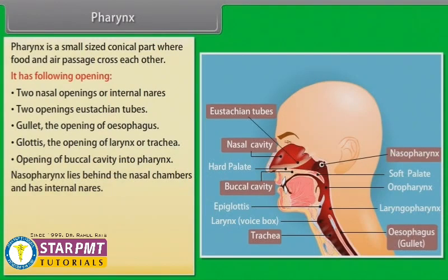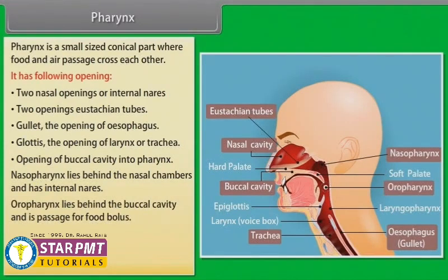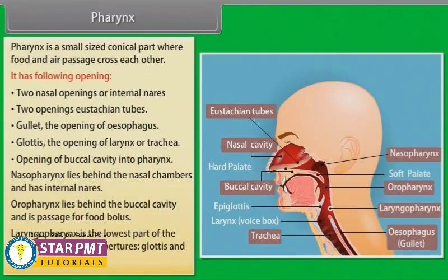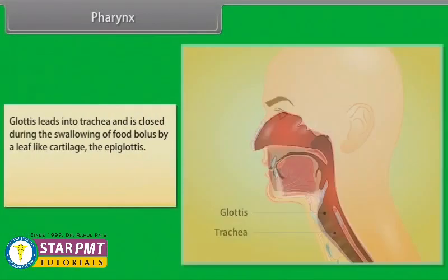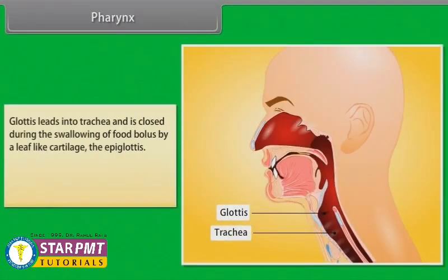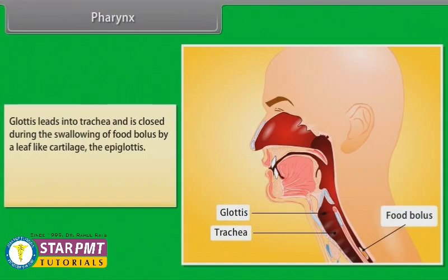The nasopharynx lies between the nasal chambers and has internal nares. The oropharynx lies behind the buccal cavity and is the passage for the food bolus. The laryngopharynx is the lowest part of the pharynx and has two apertures — the glottis and the gullet. The glottis leads into the trachea and is closed during swallowing of the food bolus by a leaf-like cartilage called the epiglottis.